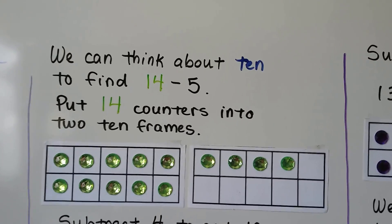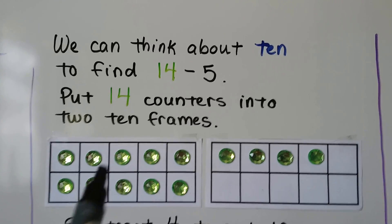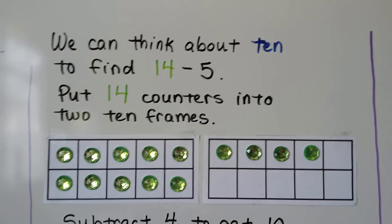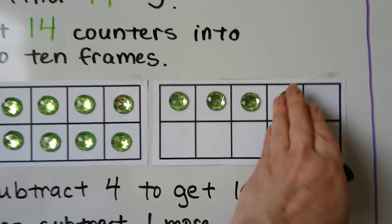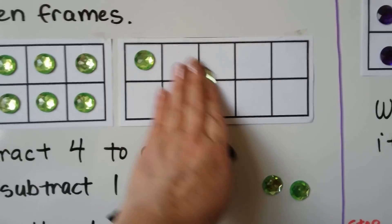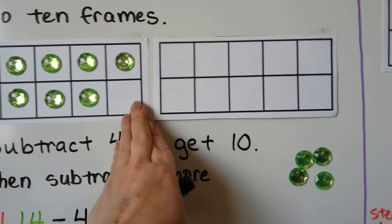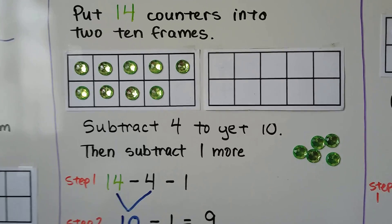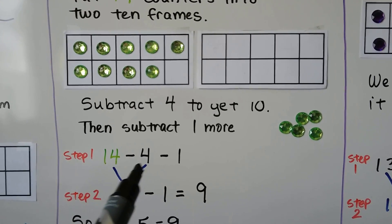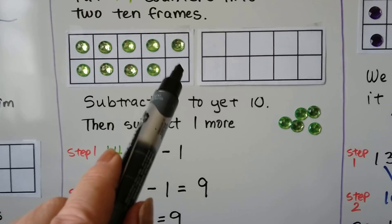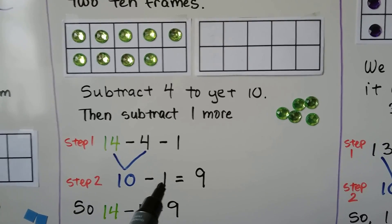So we can think about 10 to find 14 minus 5. We put 14 counters into two 10 frames: 10, 11, 12, 13, 14. We want to take away 5, so we subtract 4 first — these 4. Let's take them off the 10 frame: 1, 2, 3, 4. Then we subtract 1 more. We're going to take away 1 more. 14 minus 4 gave us 10, and then when we took 1 more away, we have 9.